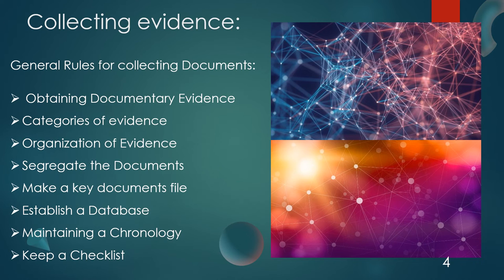Circumstantial evidence tends to prove or disprove the fact at issue indirectly, by inference. In the case of a kickback allegation, cash deposits of unknown origin to the suspect's bank account would be circumstantial — we're not talking about the check now, but about an unknown amount deposited into that person's account. It might be from other sources, but there is an unknown deposit in their bank account. So remember: direct versus circumstantial evidence.